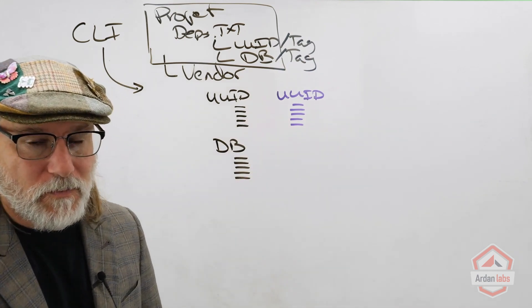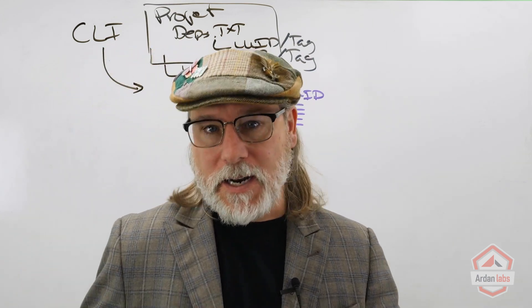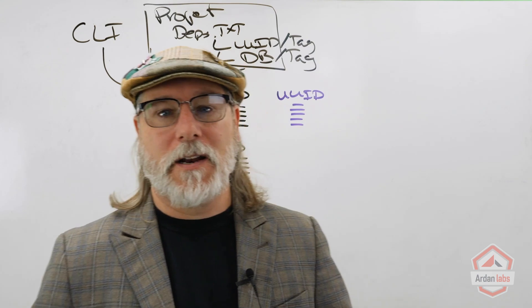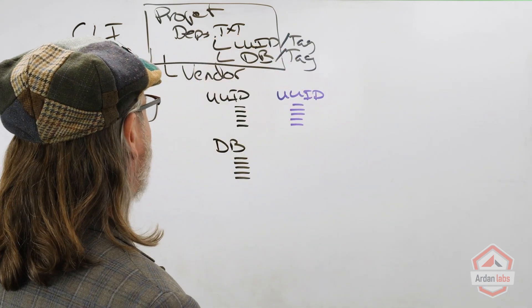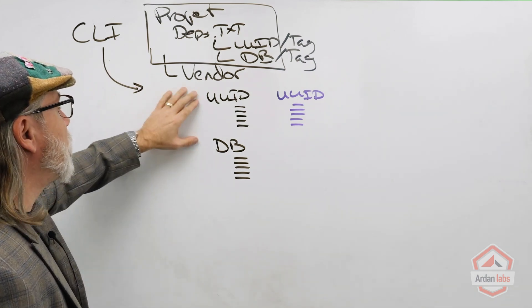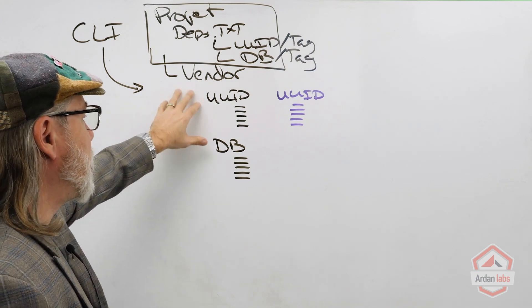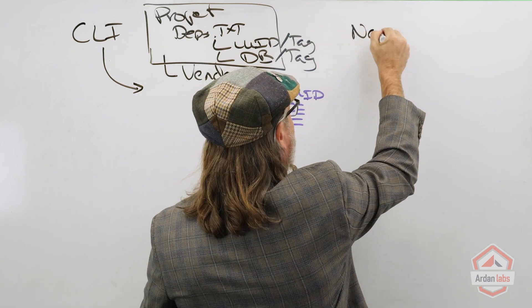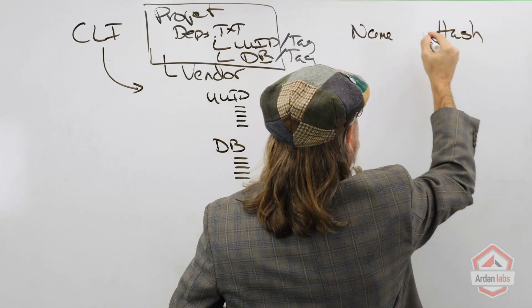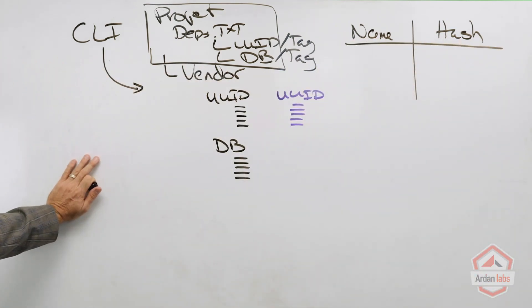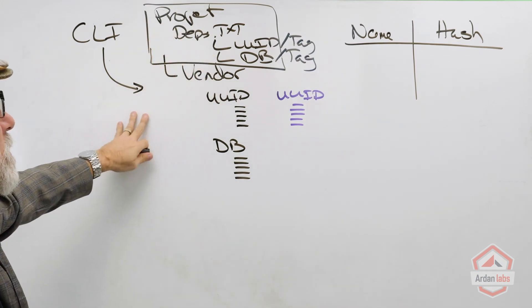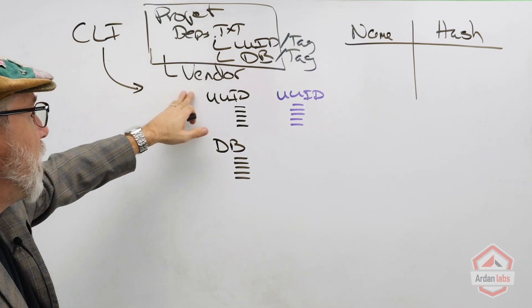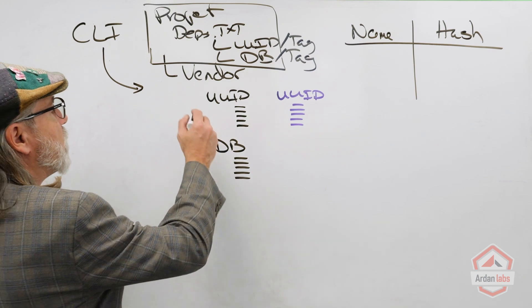We step back and ask: how do we prevent this from happening again, so that changed code never gets built and put into production? The solution: we create a database to track every package and tag we're using. The first time any project uses a new package, we write information to the database. We need two things: the name of the package, and a hash of that package's code. The CLI tool fetches UUID at a given tag, puts it in the vendor folder, and then hashes all that code.